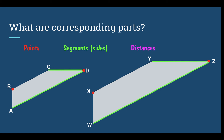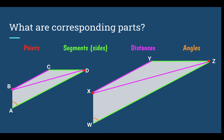Now let's look at corresponding distances. Distances can be segments — here BC would go with XY — but unlike segments, we can look across a shape for a distance. So I could find the distance from B to D, and that would correspond with the same distance from X to Z. And lastly, corresponding angles are in the same position on both shapes. Angle A corresponds to angle W, and angle C would correspond to angle Y.